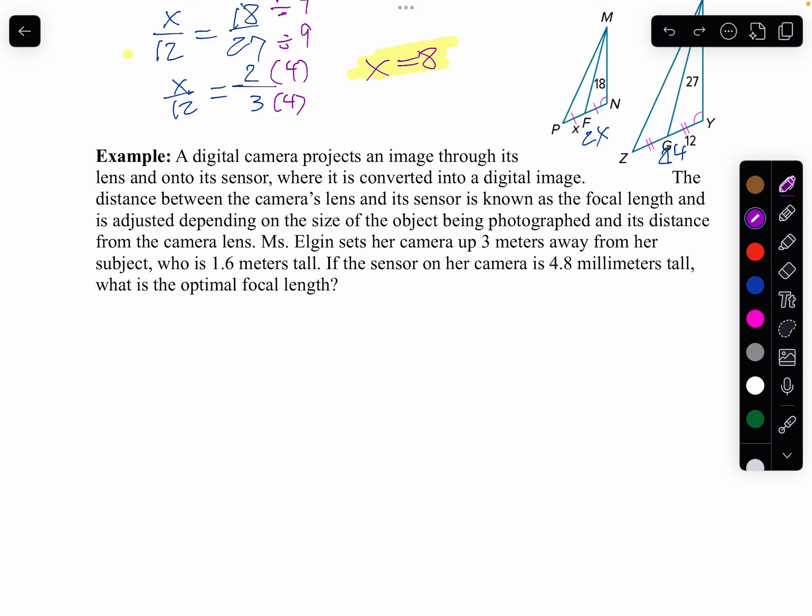So, let's draw this out. So, what happens is here is our image and then here's my camera. So, what happens is my image or the subject is 1.6 meters tall. And Mrs. Elgin sets up the camera 3 meters away from the subject. And in her camera we got 4.8 millimeters. Now, I definitely did not draw this to scale. 4.8 millimeters is pretty small. And I want to find my focal length with this F which is really the altitude here.